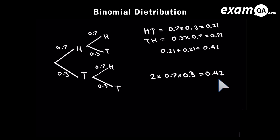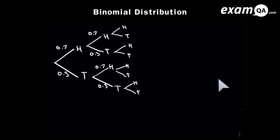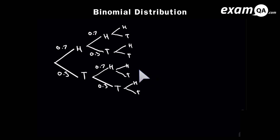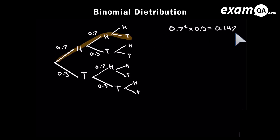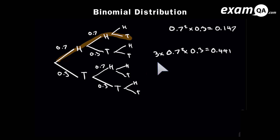So here I've got 0.7 times 0.3, times by 2 because there's two ways of that happening. Both answers are the same, and that gives us 0.42. This is the method we're going to use. So now I'm tossing my coin three times, and I want to work out the probability of getting two heads. There are three ways of getting two heads, and they all give the same answer, so you simply multiply by three.